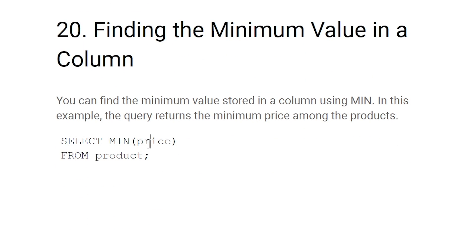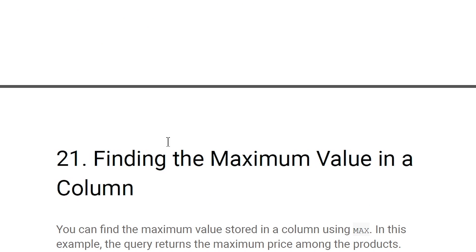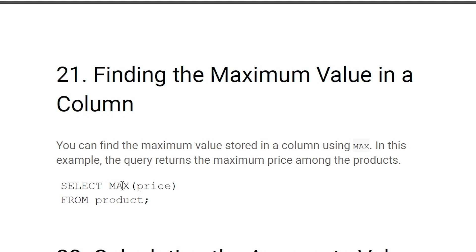Finding the minimum and maximum values in a column: use MIN and MAX functions. SELECT MIN(price) FROM product returns the lowest entry in the price column. SELECT MAX(price) FROM product finds the maximum value in the price column and returns it.